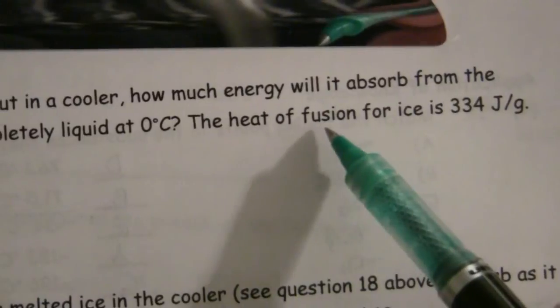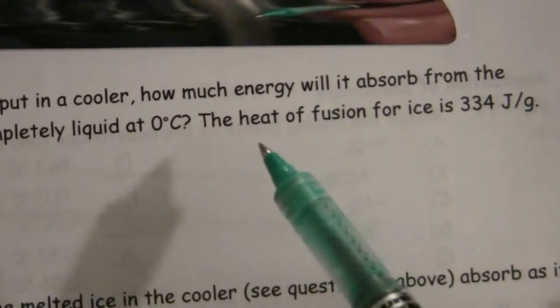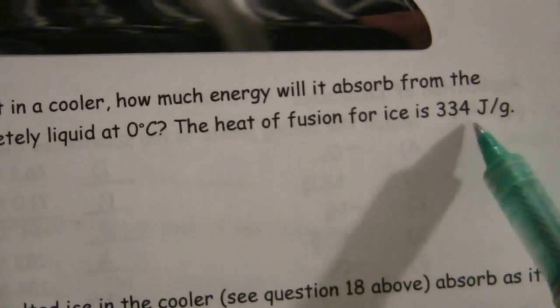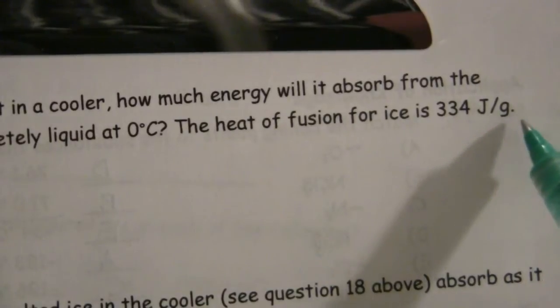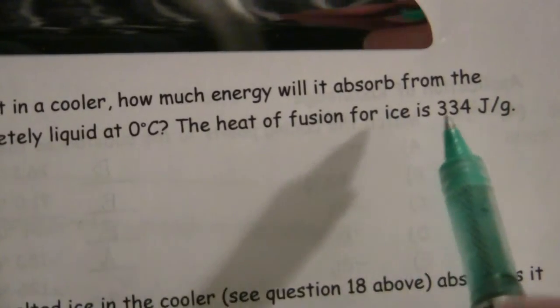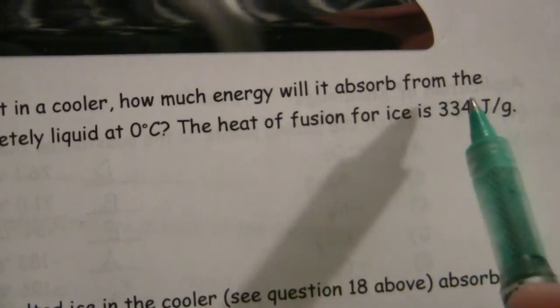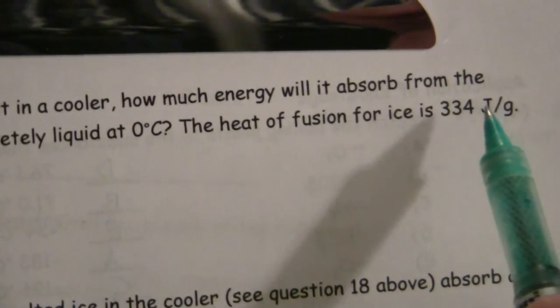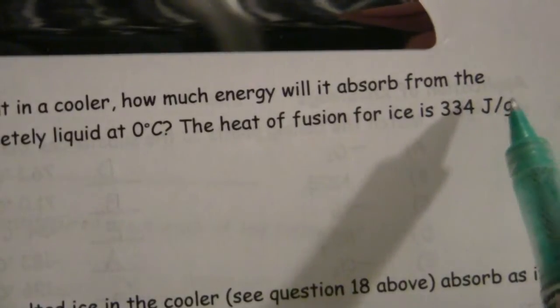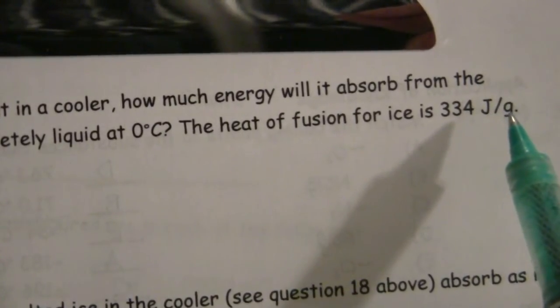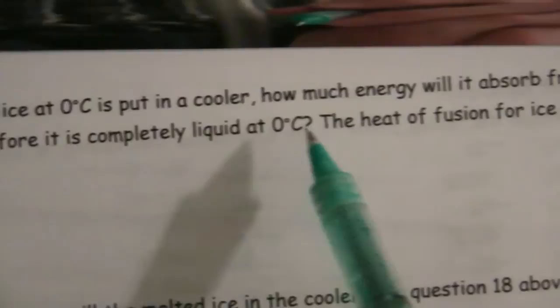Heat of fusion. Now even if you don't remember these terms, the key thing here is this is joules per gram. So that means it requires 334 joules, that's energy. 334 joules to melt a gram of ice at its freezing point.